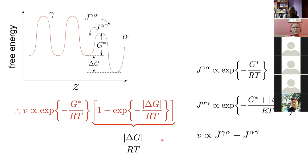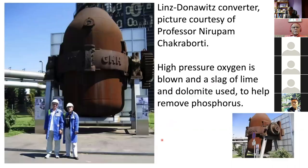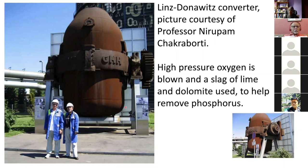Here's another example closer to home, in the context of steelmaking. This is the Linz–Donawitz converter located in Austria. The Bessemer process was able to produce steel but it contained quite a lot of phosphorus, which is difficult to eliminate. By blowing oxygen at high pressure in this converter, you can actually reduce the phosphorus content using a slag of lime — into which the phosphorus partitions. This technology made all the difference to the mechanical properties of steels in the old days.